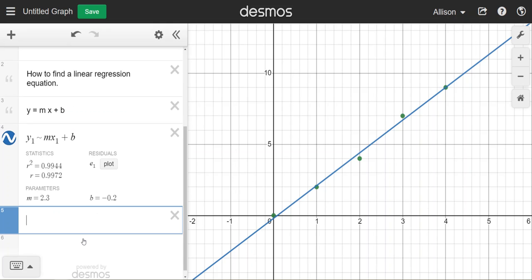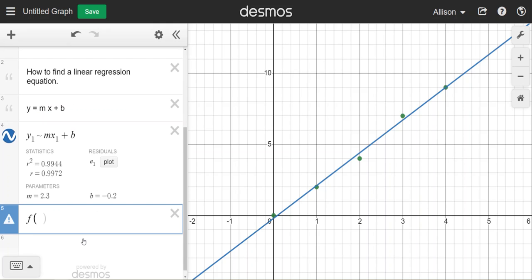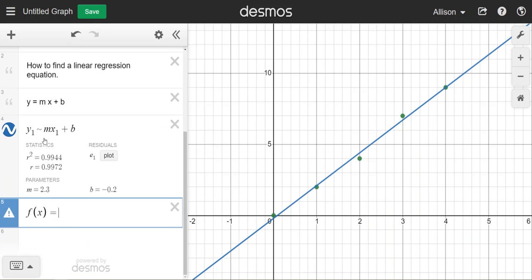Now we can write the line as a function with the parameters. f(x) is my y here. f(x) equals m - I can see the parameter here is 2.3 - times x plus b. I can see the parameter b is negative 0.2, and now this line is exactly on top of the regression line. It's been rewritten.